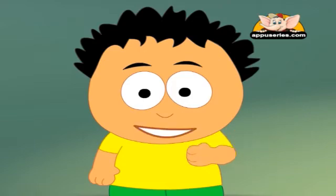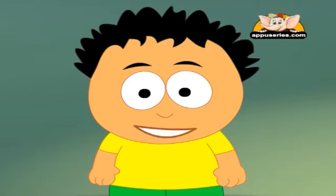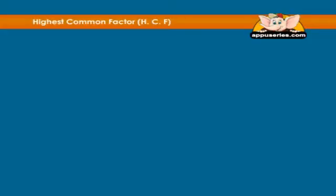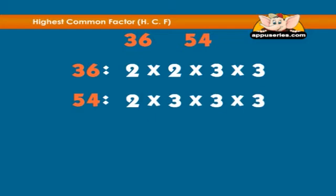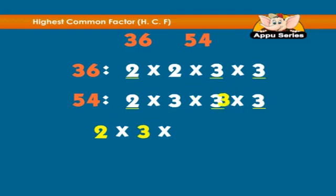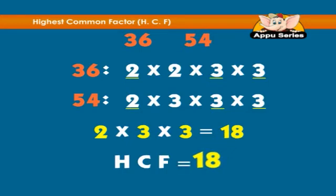Method 2: list the prime factors, then multiply the common prime factors. For the same example, 36 and 54: the prime factors of 36 are 2 × 2 × 3 × 3. The prime factors of 54 are 2 × 3 × 3 × 3. Multiplying the common prime factors: 2 × 3 × 3 equals 18. Therefore, the highest common factor is 18.